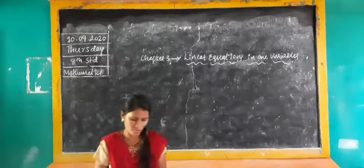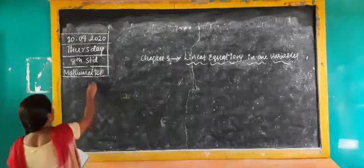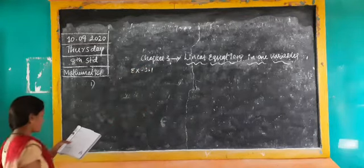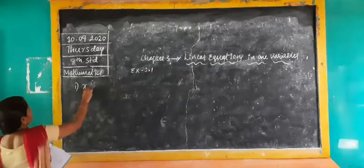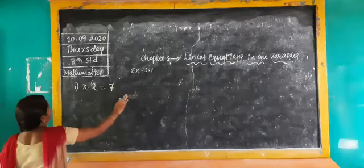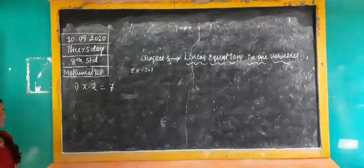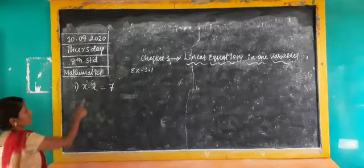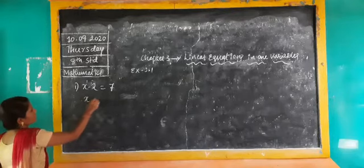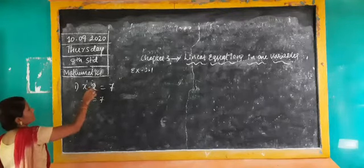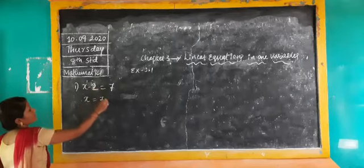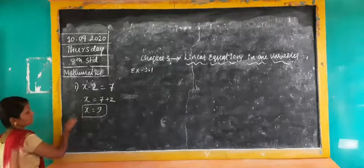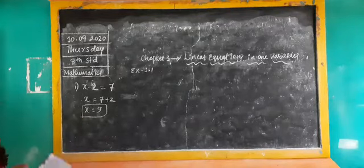Exercise 3.1, first question: x minus 2 is equal to 7. Listen carefully. Here x is the unknown — this is the linear equation. Keep x on the left: x equals 7, and since minus 2 is there on the left, it becomes plus 2 on the right. So x equals 7 plus 2, which is 9.